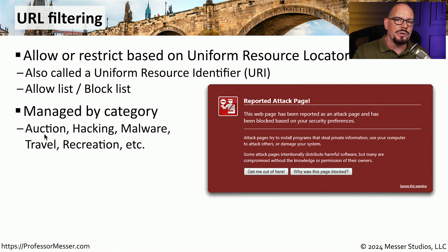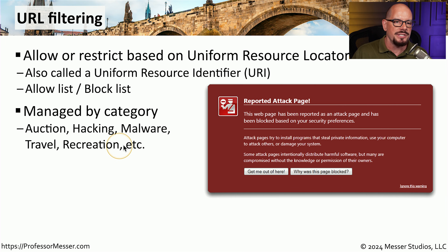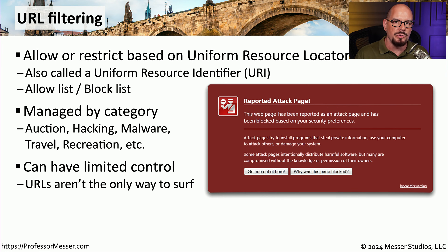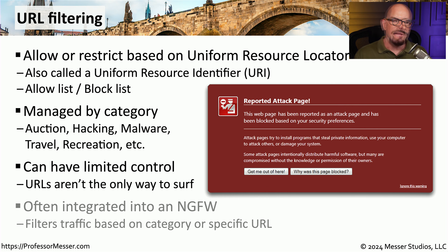URL filtering may allow or disallow access to auction sites, hacking sites, travel sites, recreation sites, and many other categories. Users often try to find ways around URL filtering, so we often combine it with a firewall rule set to prevent circumvention of our security rules. Most next-generation firewalls have URL filtering already built into the software, so you can simply enable or disable these categories and include them in an existing firewall rule.